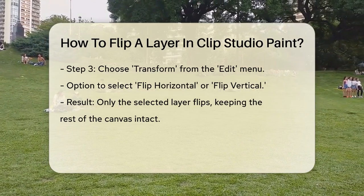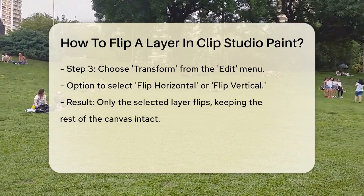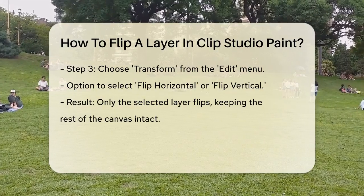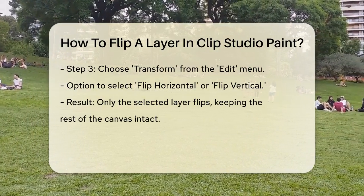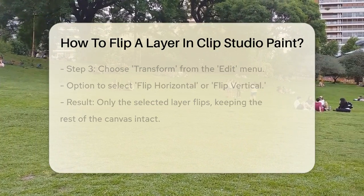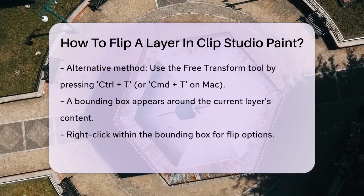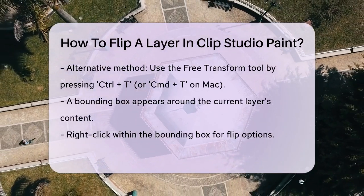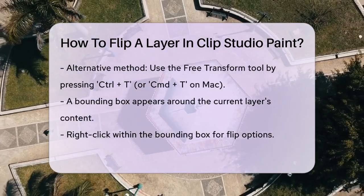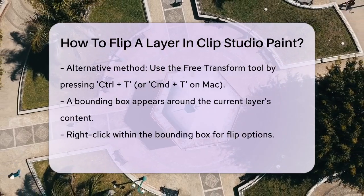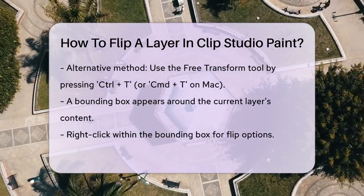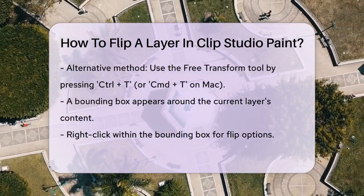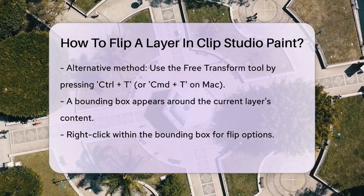If you prefer a quicker method, you can use the Free Transform tool. Press Control-T or Command-T on a Mac to summon the Free Transform tool. This will create a bounding box around the content of the current layer. Right-click within this box to find the options for horizontal and vertical flips in the pop-up menu.